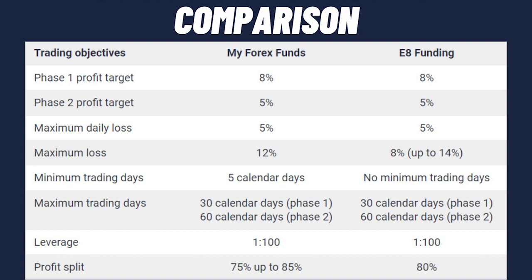The one upside of E8 Funding is that once funded, you can scale your maximum loss limit from 8% up to 14%, increasing by 1% for each successful withdrawal. For minimum trading days, My Forex Funds requires five calendar days per evaluation phase, while E8 Funding has no minimum trading day requirement at all. For maximum trading day periods, both firms are identical: 30 calendar days in Phase 1 and 60 in Phase 2. Leverage is also the same — 1:100 for both.